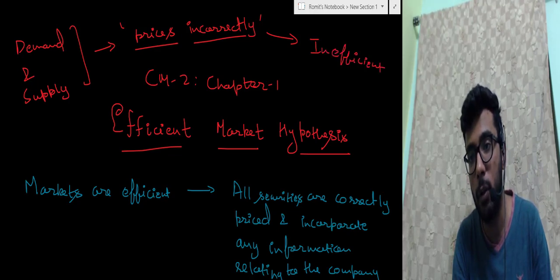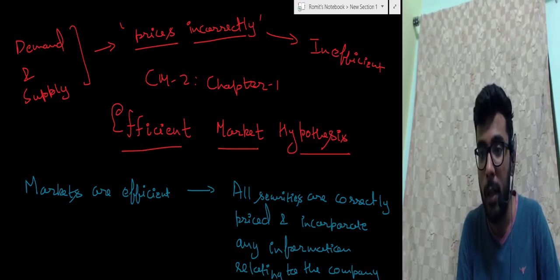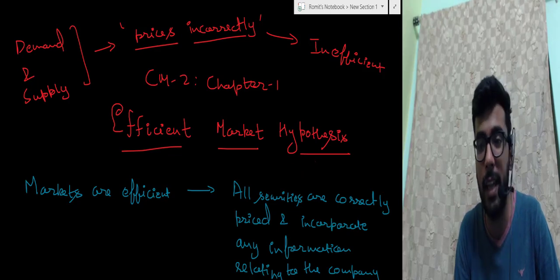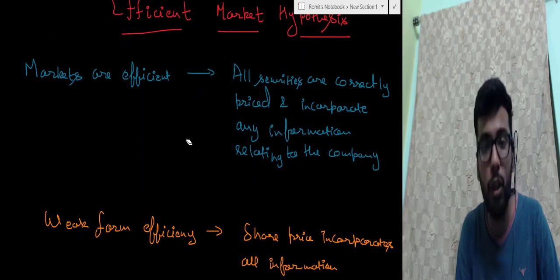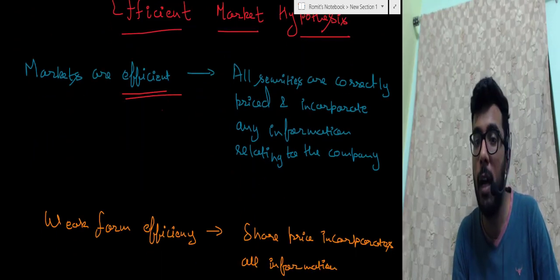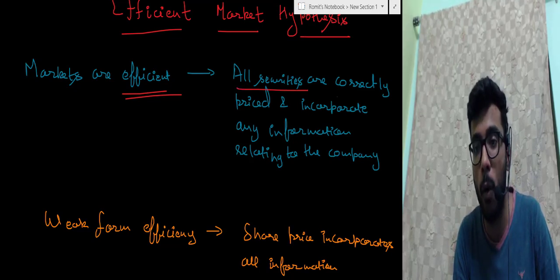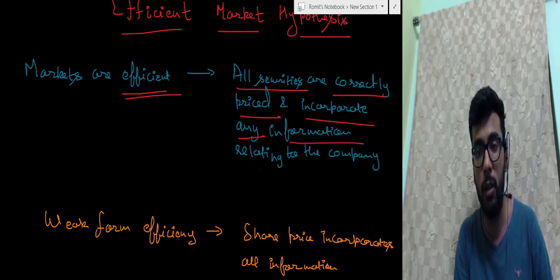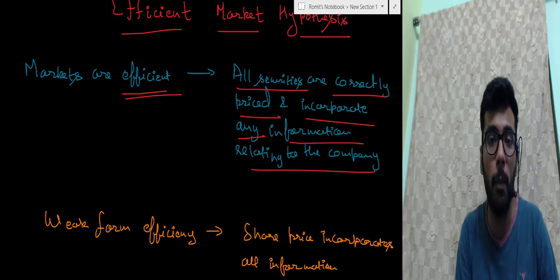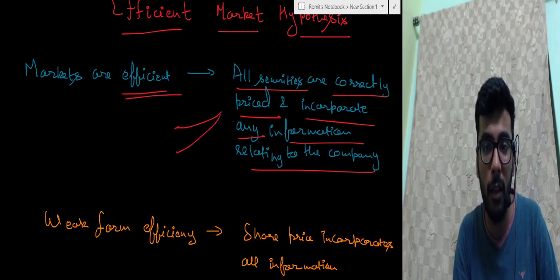An inefficient market is one which prices the share incorrectly. Price inefficiencies can exist in multiple forms. An efficient market is one where all securities are correctly priced and incorporate any information relating to the company. So any information relating to the company is contained in the share price. This information can be available in three forms.